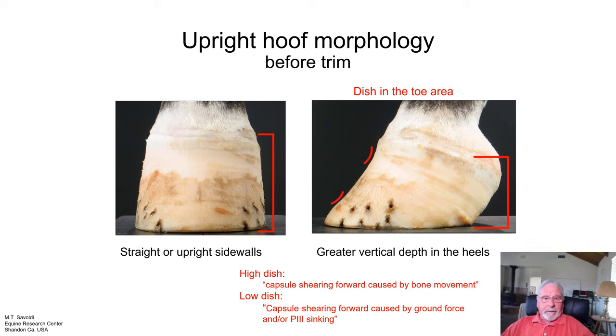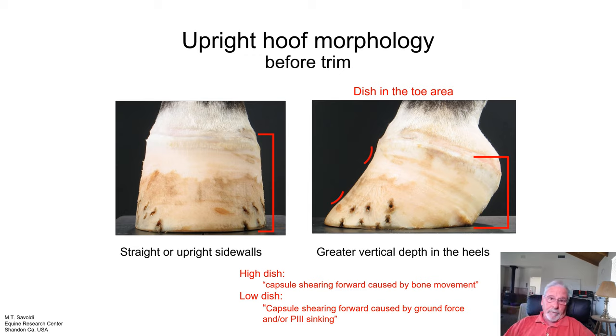If the capsule is going to yaw outward, it would be from the knee or the shoulder or maybe a wide chest. There are different things that will occur there to cause the foot to toe out or toe in.